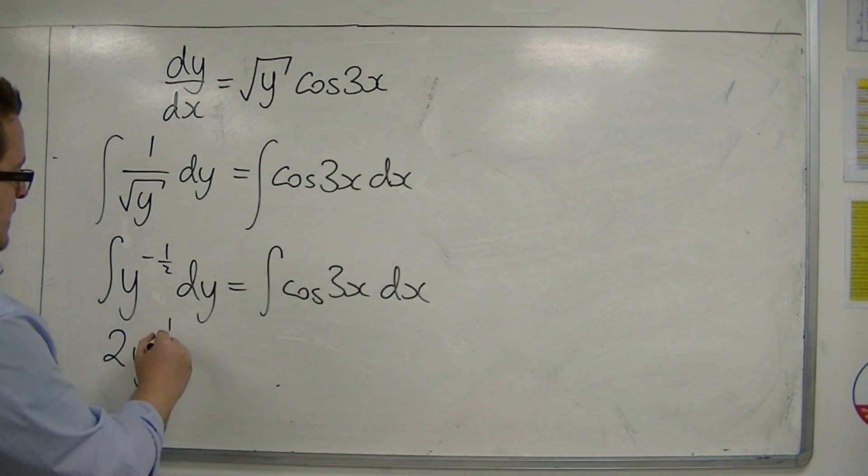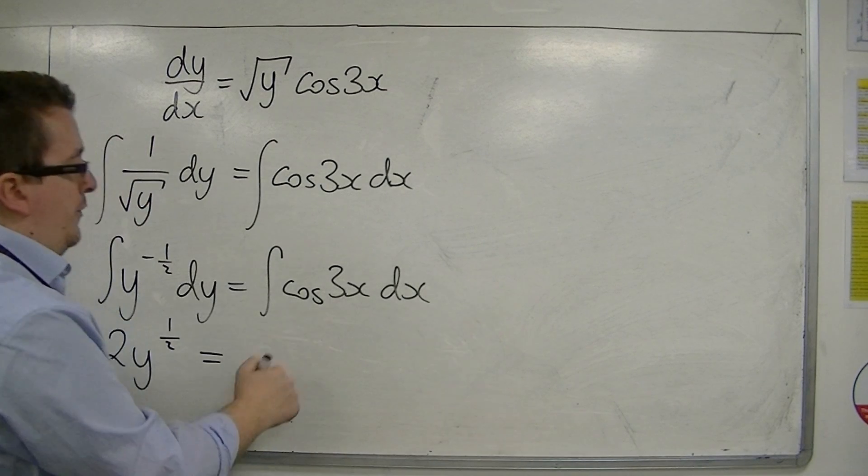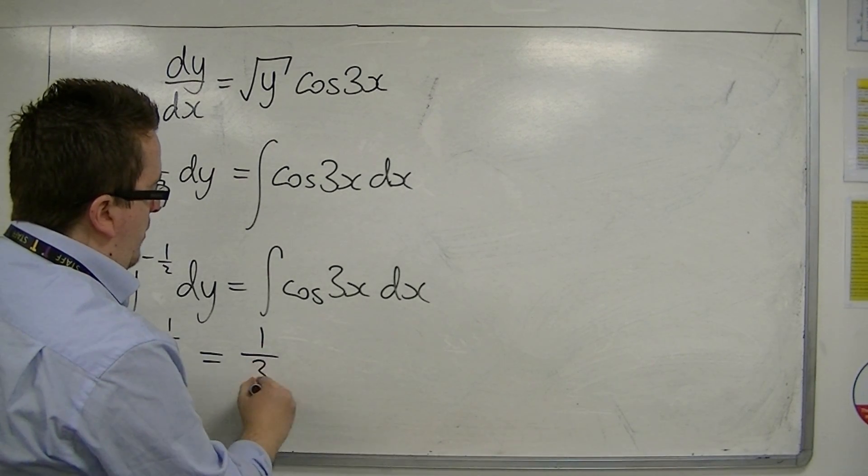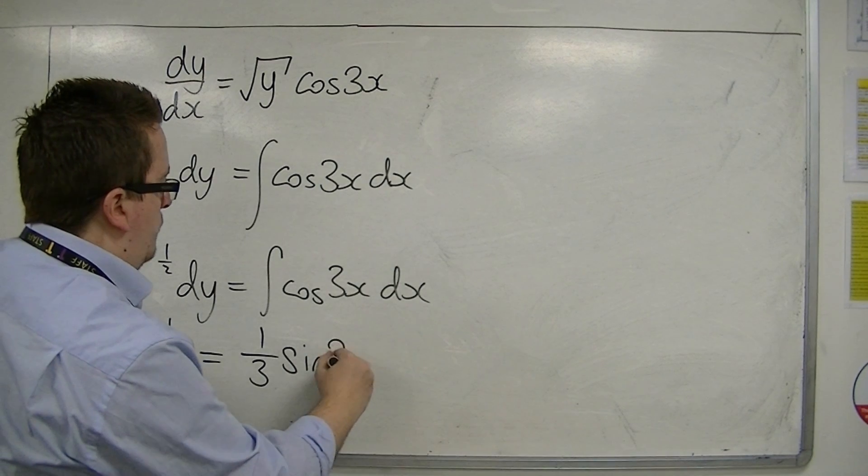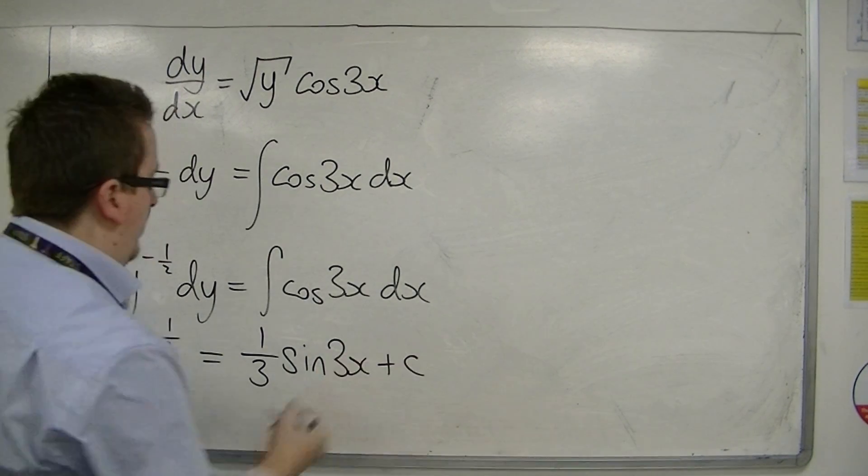So I get 2y to the half equals - the integral of cosine is sine - so this is 1/3 sin 3x plus a constant c.